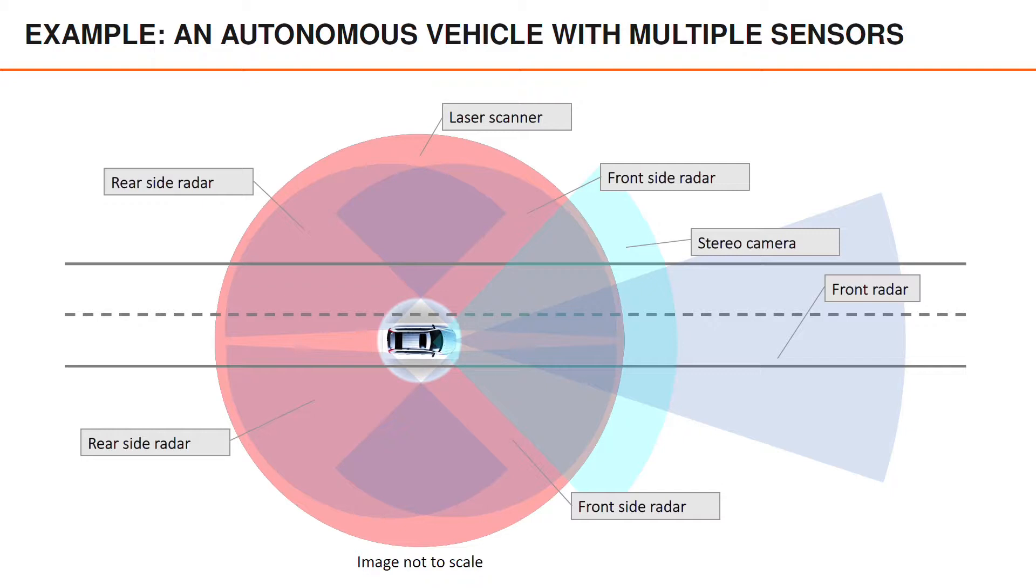Before we start talking about object birth and death, let's start with an example. Here we have an autonomous vehicle that has several sensors. We have five radars: one long-range pointing forwards, and then four short-range radars mounted on each corner of the vehicle. We also have a front-facing stereo camera, and lastly we have a laser scanner mounted on the roof. This is a fairly typical set of sensors for an autonomous vehicle.